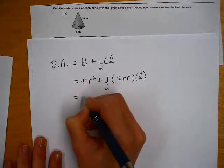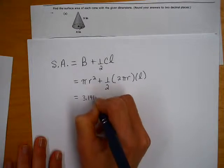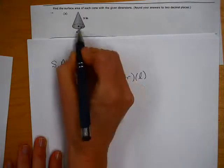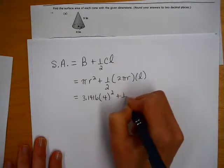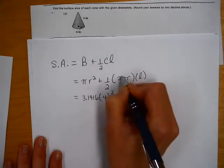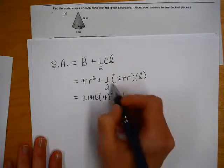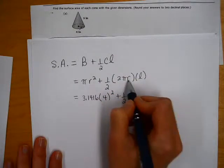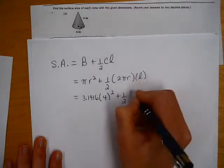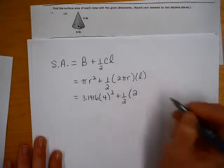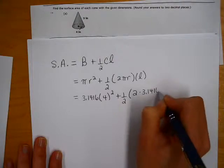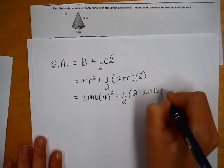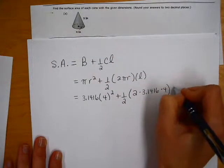So I'm going to do 3.1416 times the radius of this cone is four inches, so four squared, plus one-half. Now, honestly, you see this two and this two here reduce, so you could just say pi times radius times the slant height, that's okay as well, but I'm going to go ahead with what I have here. One-half times two times 3.1416 times the radius is four times the slant height, that's nine.